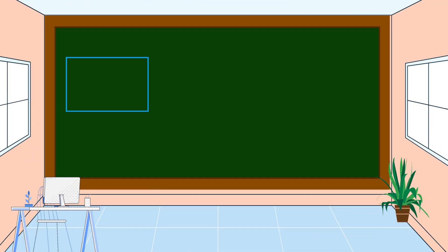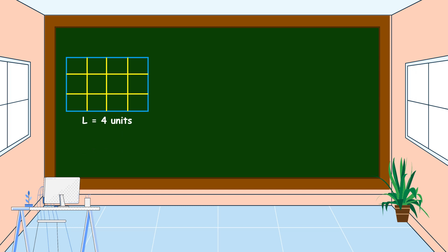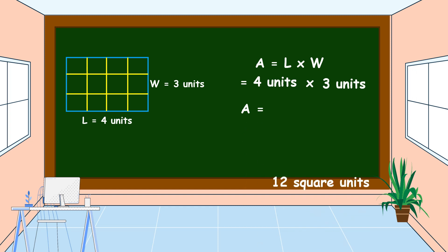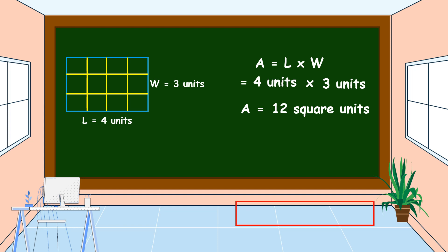This is a rectangle. How many dimensions are there? There are two dimensions: the length and the width. For example, the length is four units and the width is three units. To find the area of this rectangle, we use the formula: area equals length times width. Four units times three units equals 12 square units. This is the area of this rectangle.